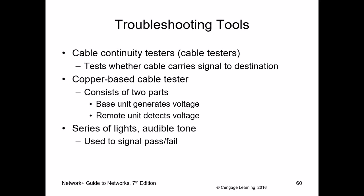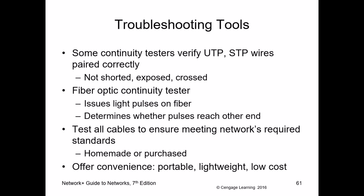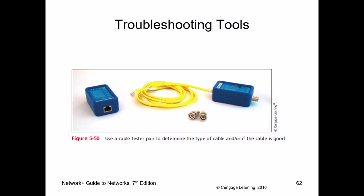Continuity testers are available in the lab — you send out a signal and check if it's received on the other end. You can use audible tones or lights for fiber optic connections as well. A cable tester verifies your RJ45 wiring — you can use it to test crossover or straight-through cables. These tools range from simple to expensive.